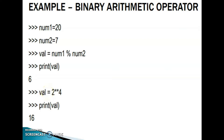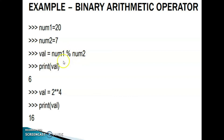Example for binary arithmetic operators: num1 is equal to 20, num2 is equal to 7. val is equal to num1 mod num2. Print val. What will be the output? The modulus operation performs the remainder operation. When we perform 20 divided by 7 we get the answer as 2, and the remainder is 6. So val will be 6. Then, val is equal to 2 double star 4 — that is exponentiation, 2 raised to 4. Print val — that is equal to 16.